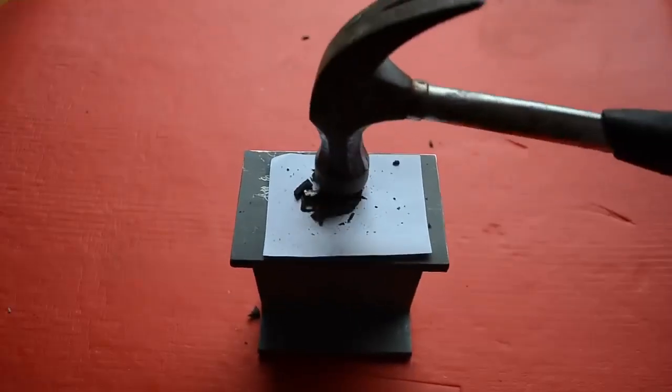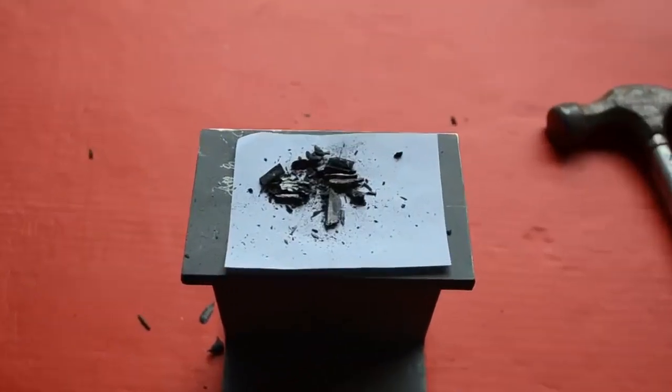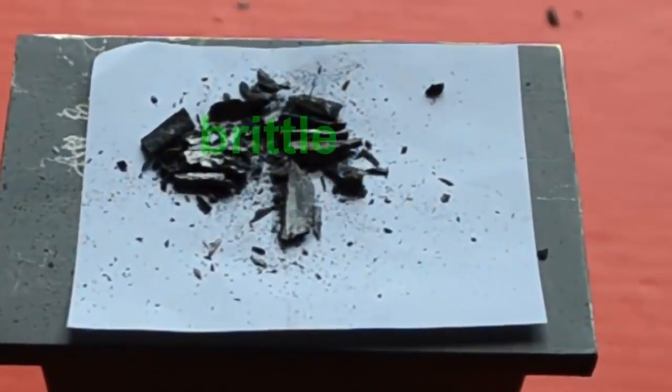And if you hit this carbon with a hammer, it smashes into bits. This is called being brittle. It's the opposite of being malleable.